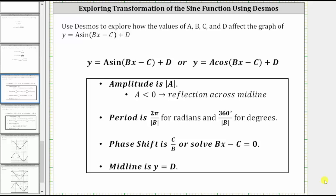This lesson will use Desmos to explore the transformations of y equals a times sine of the quantity bx minus c plus d. The same transformations apply for both the sine and cosine functions. The absolute value of a is equal to the amplitude, and if a is less than zero, we have a reflection across the midline. The period is equal to two pi divided by the absolute value of b for radians, and 360 degrees divided by the absolute value of b for degrees.